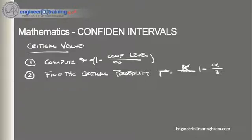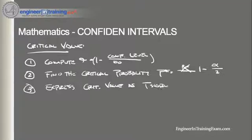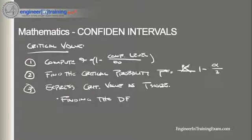The third step is to express the critical value as a t-score. We do this by first finding the degrees of freedom, which is typically equal to the sample size minus one. Then we find t-star — the critical t-score — which is the t-score having degrees of freedom equal to df and a cumulative probability equal to the critical probability. We go to the t-distribution tables to determine what the critical t-score is.